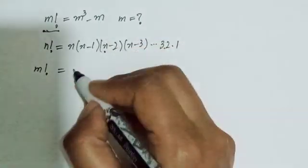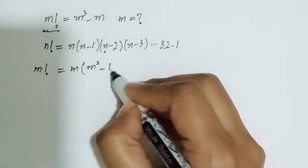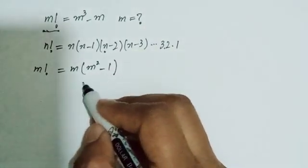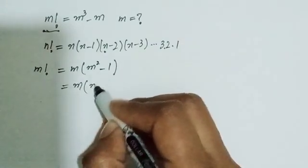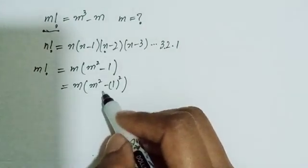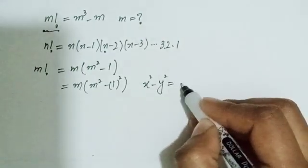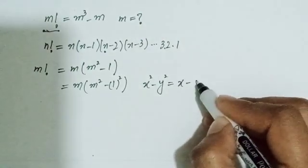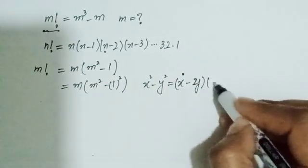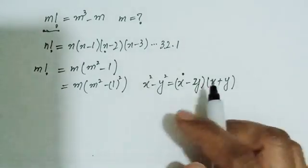I can see that I can take out the common factor m, leaving m squared minus 1. This can be written as m squared minus 1 squared. So I can use the algebraic identity: x squared minus y squared equals (x minus y)(x plus y). I am going to use this identity here.